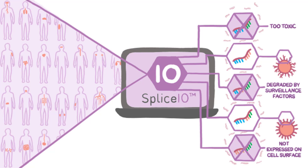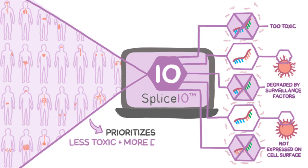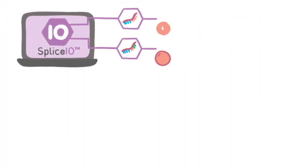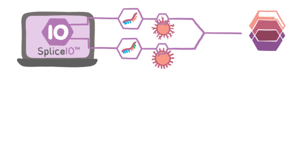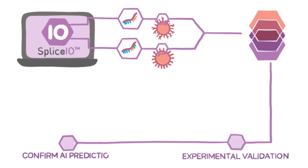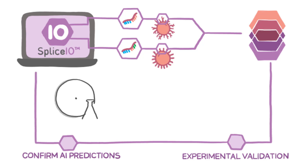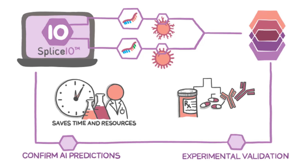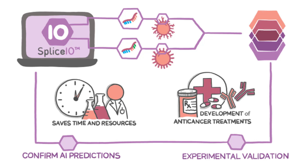By optimizing the selection of neoepitopes expressed in many tumors across thousands of patients but no normal tissues, Splice.io prioritizes less toxic and more effective neoepitope candidates. The best neoepitope candidates selected by Splice.io are then delivered to the Invisigenics laboratory to perform experimental validation and confirm the AI predictions, saving countless amounts of time and resources for scientists while accelerating the development of anti-cancer treatments to help larger patient populations.